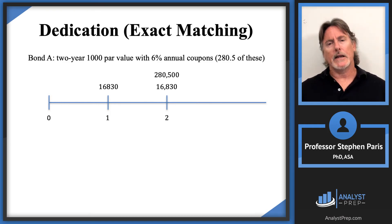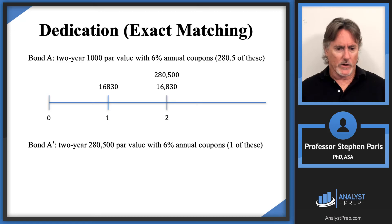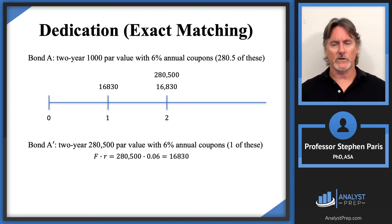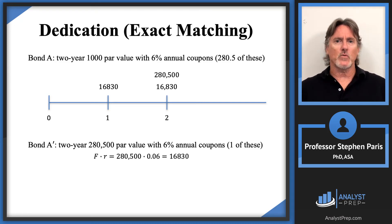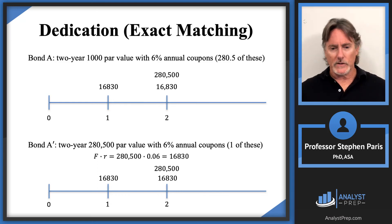Now consider Bond A-prime: also a two-year bond, but with a face value of $280,500 and 6% annual coupons, and you buy just one of them. The coupon per bond is 280,500 × 0.06 = $16,830. So buying one Bond A-prime gives $16,830 at time one, $16,830 at time two, and $280,500 redemption at time two — mathematically identical to buying 280.5 Bond A's.